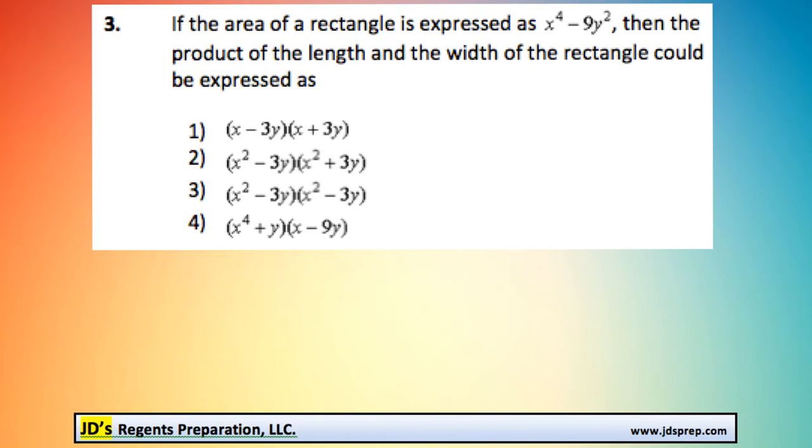This is problem number three from the June 2015 Algebra Regents exam. We've got the area of a rectangle that's expressed as x to the power of 4 minus 9y squared, and it says the product of the length and the width of the rectangle could be expressed as what?